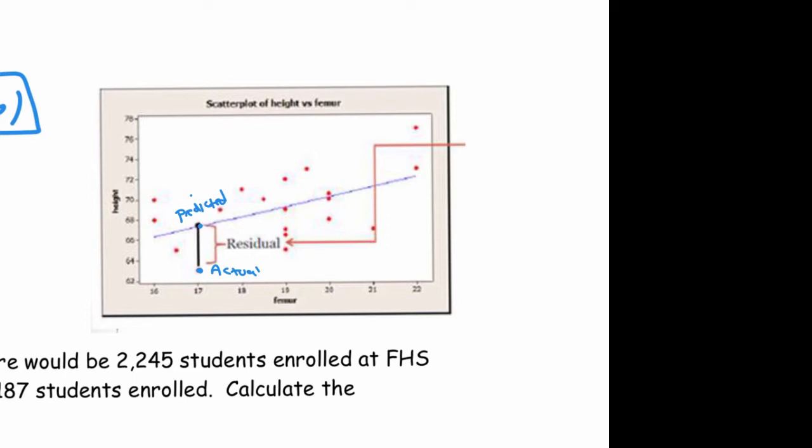Over here your predicted is there and your actual data value is there. This time the residual would be positive because the actual is greater than predicted. Sorry, I reversed that. Your residual would be negative because your actual is below the predicted, resulting in a negative value.